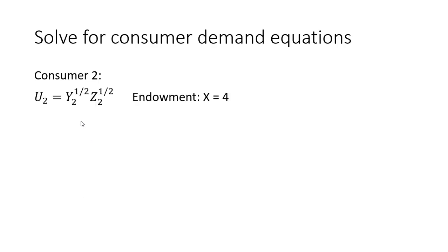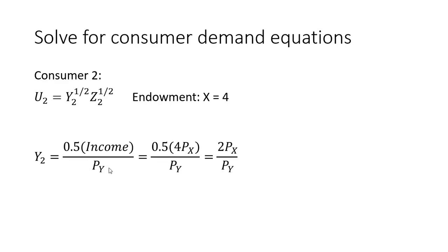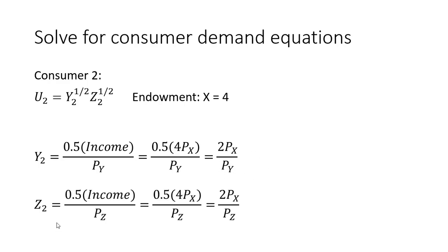Moving on to consumer two. Consumer two's utility is over good y and good z. Consumer two has an endowment of x that equals 4. Like the previous consumer, this consumer will spend half his money on each good. The demand for good y for consumer two is half the income divided by the price of good y. Income is 4 times the price of good x, which simplifies accordingly. The demand for good z is similarly half his income spent on good z divided by the price of good z, which simplifies as well.